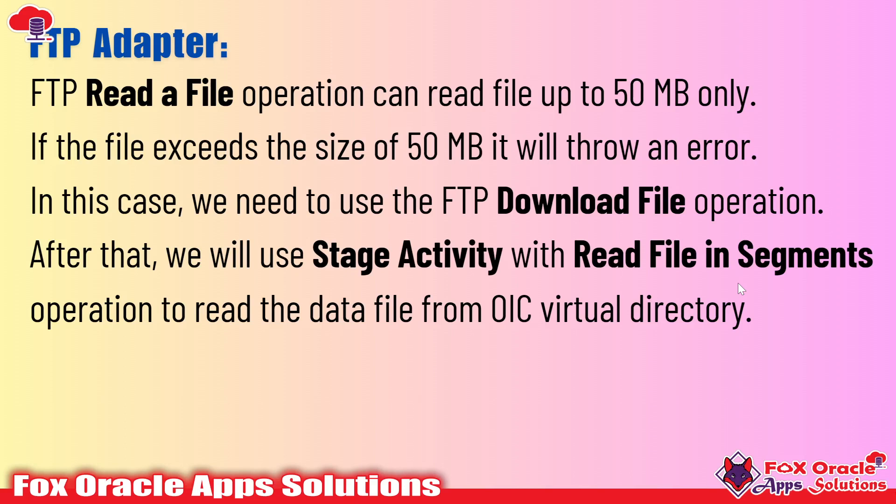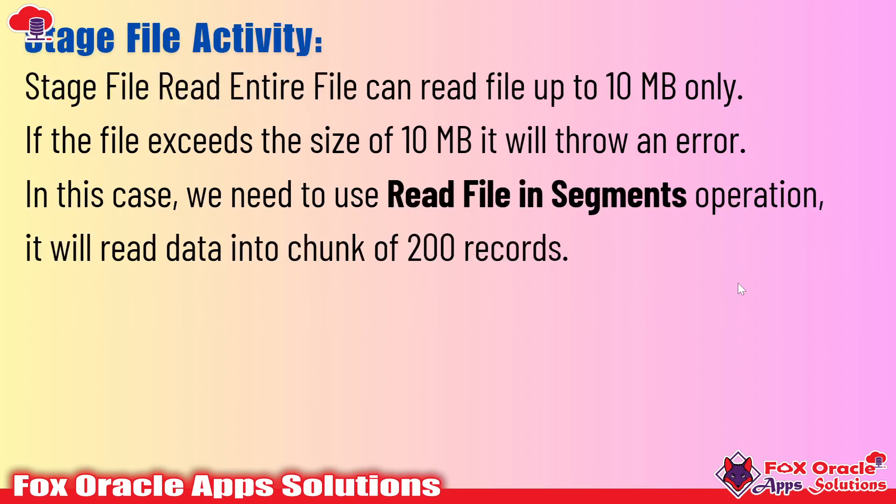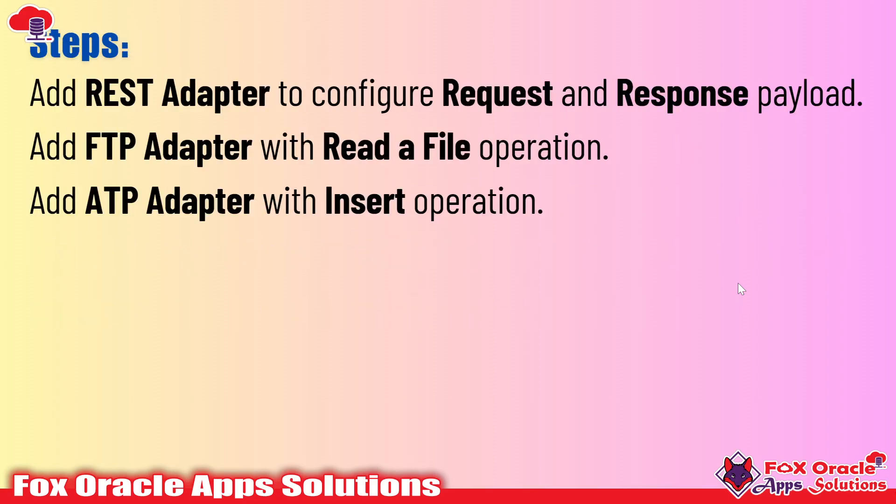When we use the download file operation, it downloads the data file from the FTP server and places it into the OIC virtual directory. Then with the stage file activity, we use the read file in segment operation to read data present in that OIC virtual directory. With the stage file read entire file, we can read up to 10 MB only — beyond that it generates an error. The read file in segment operation allows us to read up to 1 GB of data in chunks of 200 records.